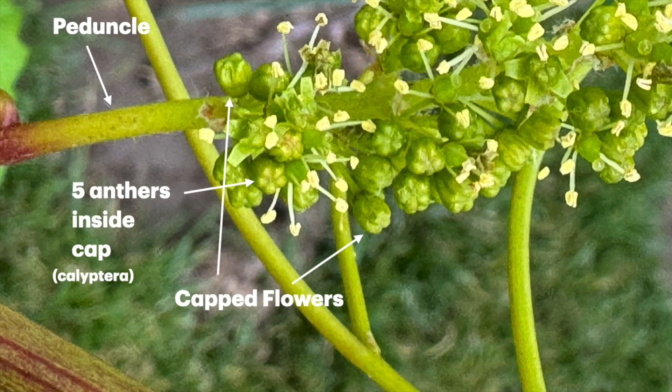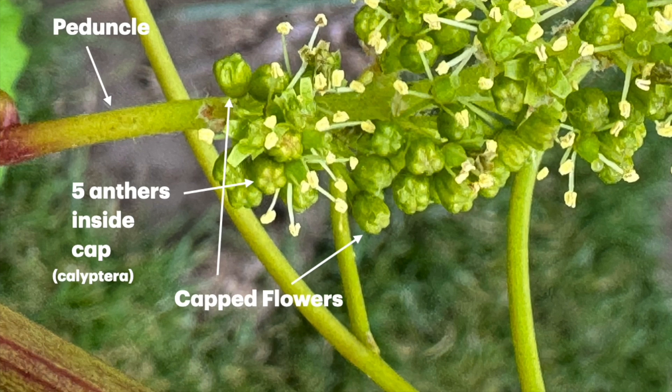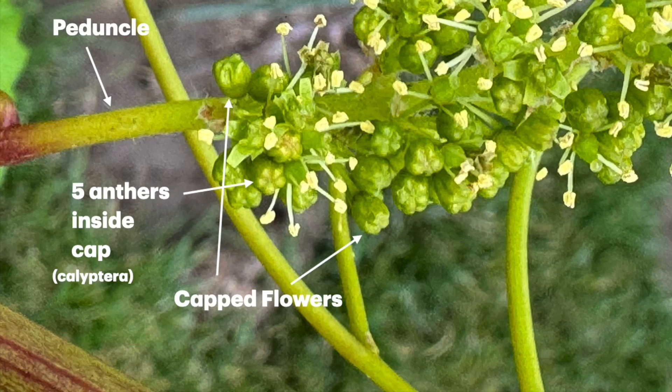I just wanted to point out here in the bottom left-hand corner, you can see the five anthers poking and pushing on the inside of the cap, getting ready to push it off. The cap is known as the calyptra, and these are actually the petals of a flower that have fused over the stamens and the pistil.